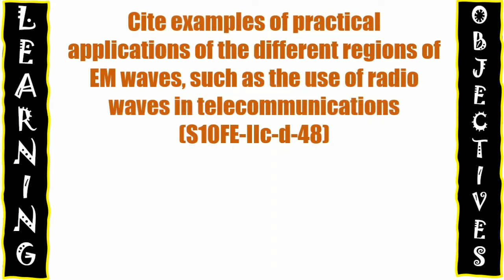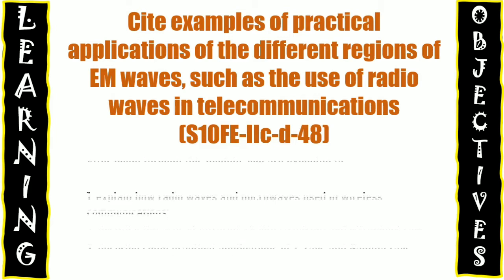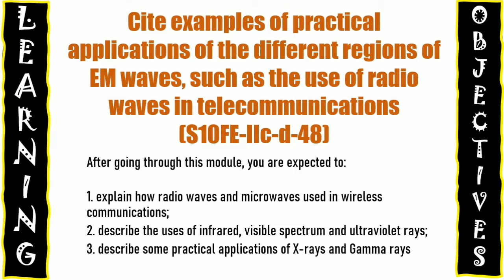Let's proceed now to our learning objectives. After going through this module, you are expected to: 1. Explain how radio waves and microwaves are used in wireless communications. 2. Describe the uses of infrared, visible spectrum, and ultraviolet rays. 3. Describe some practical applications of x-rays and gamma rays.